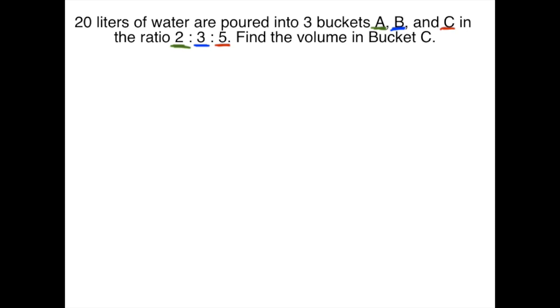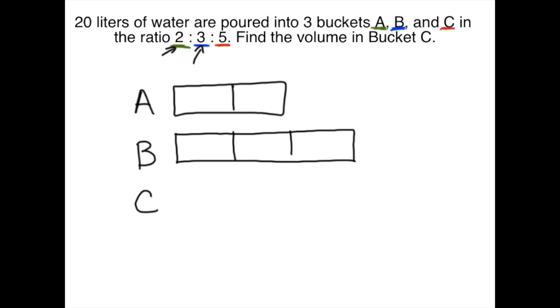So just like we were solving the problems with two units we're going to label on the side our buckets A, B, and C. And again we know that ratio problems are always set up as comparison. So A we have two units. B, we have three units. And remember they have to be the same size. We need each unit to be the same. And C, we have five units.